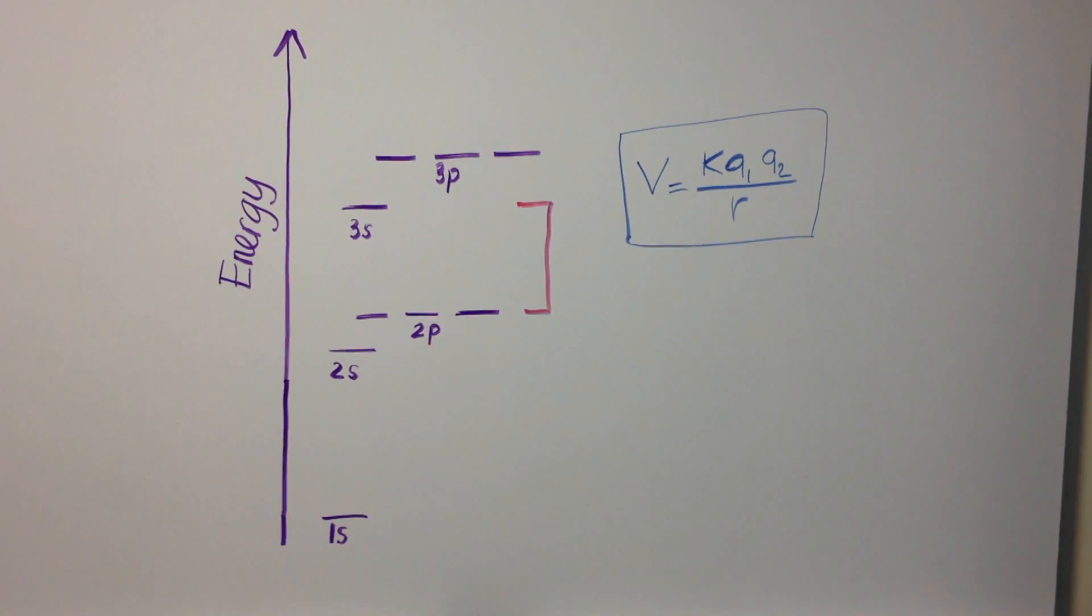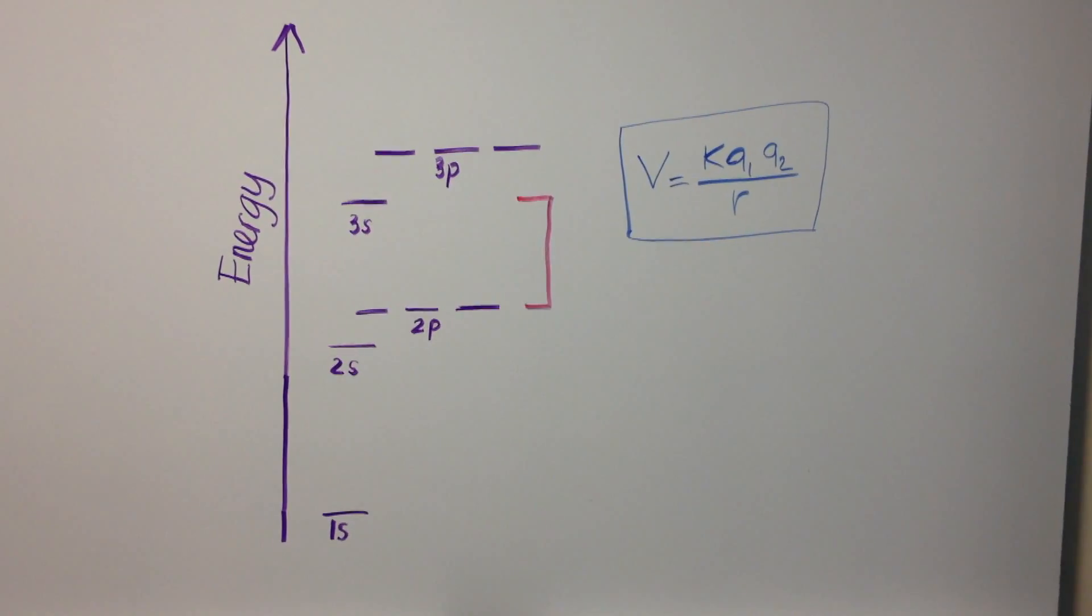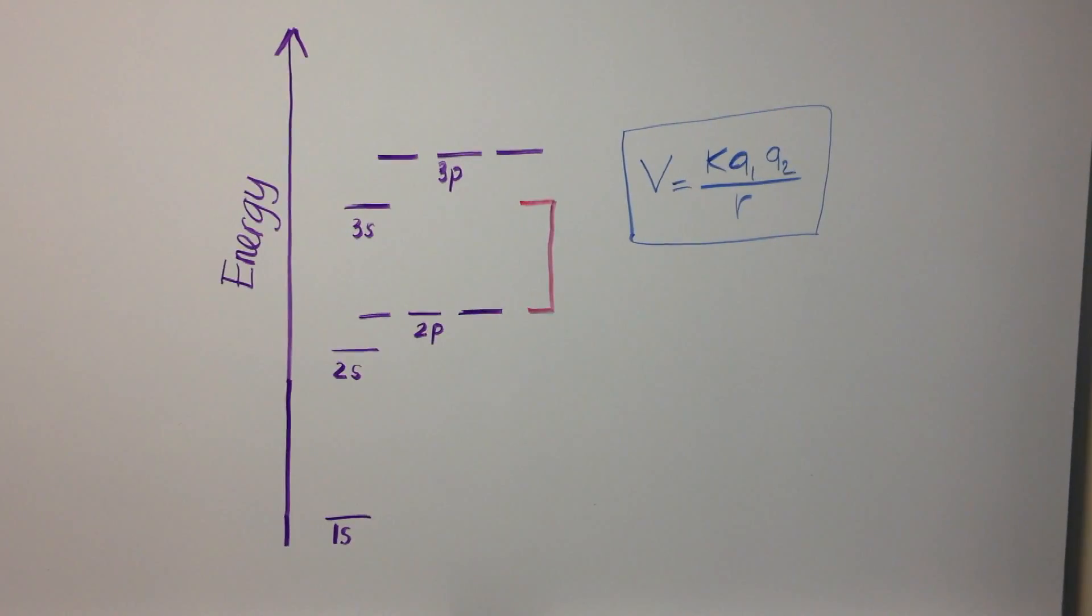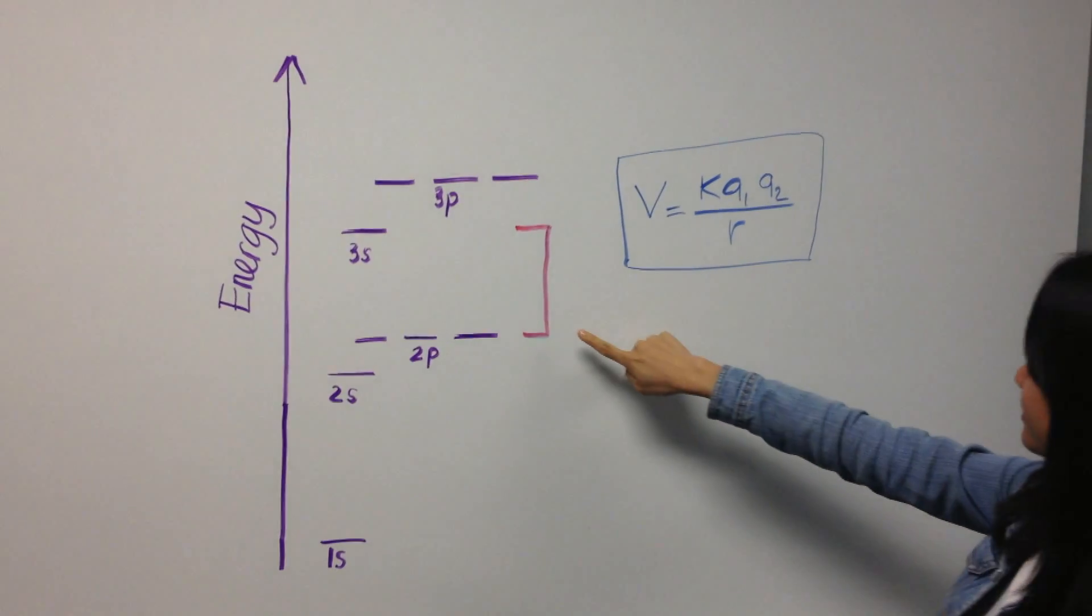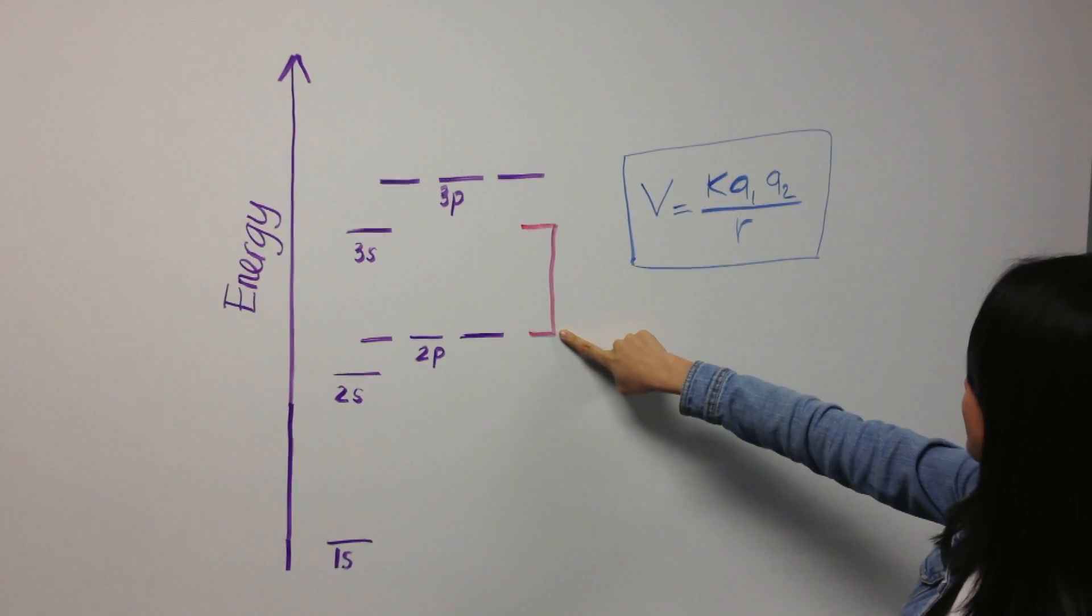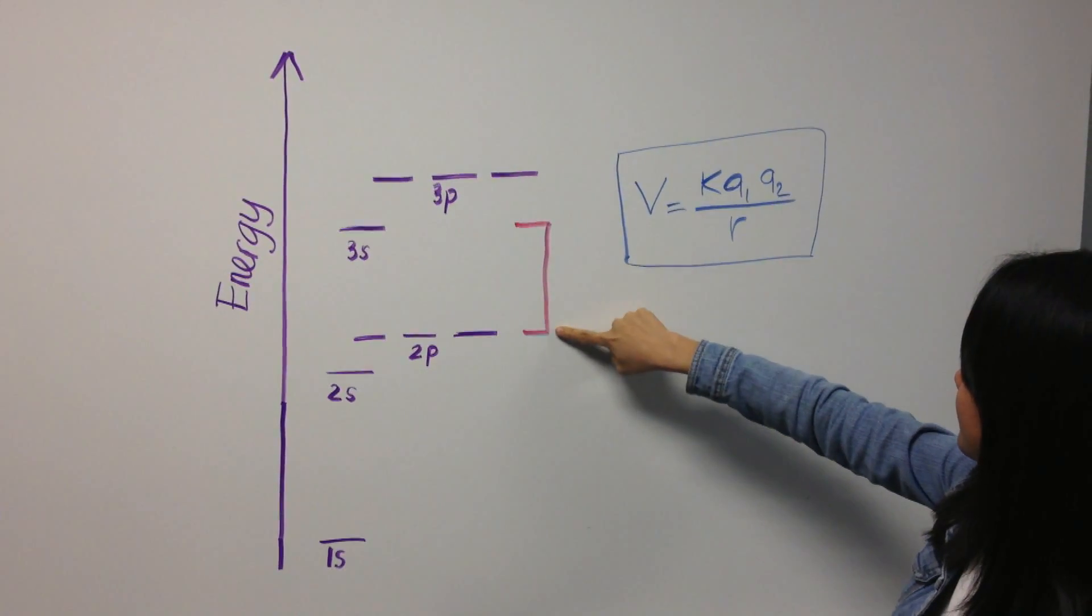However, for the addition of an electron to be favorable, the attraction between the electrons and the nucleus must overcome the energy level of the orbital that it is being placed into. As you can see from the energy level diagram, there is a substantial increase between Np to N plus 1s orbitals.